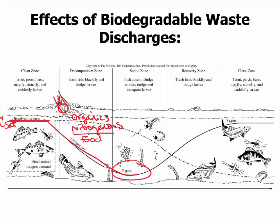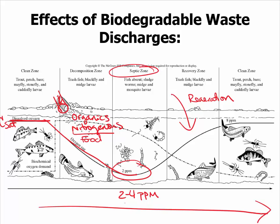Now if the oxygen gets down below the level that fish require to live, then this becomes septic. The rule of thumb is that between two and four parts per million, fish begin to die. At two parts per million, even bottom feeding fish such as carp die. Now after this point in the river, even if all of the organics and nitrogenous waste are consumed, the DO will continue to be low until re-aeration is performed by dissolved oxygen dissolving into the river. This rate can be slow, and so this whole cross section of the river could perhaps take several kilometers or miles for the DO to come back up.